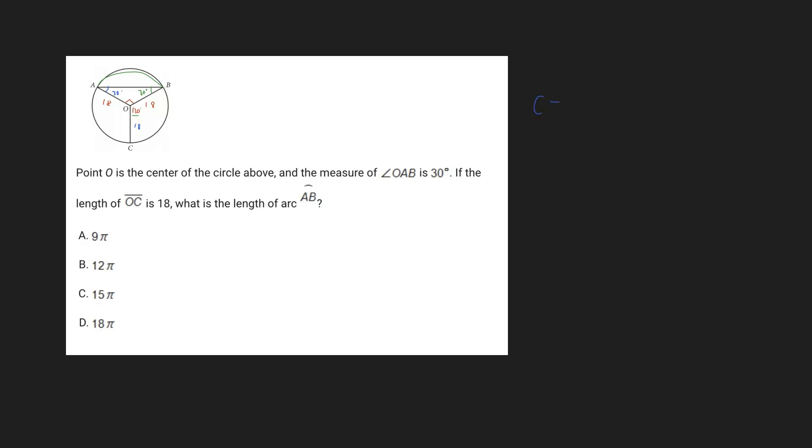The circumference of a circle is equivalent to 2π times the radius. So the radius is equivalent to 18. So we can just do 2 times 18 is 36π. And so that is our circumference.